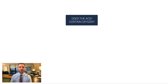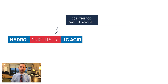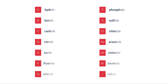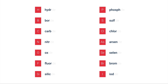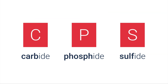If the acid does not contain oxygen, the naming format is: hydro-[anion root]-ic acid. The anion root comes from the IDE names for non-metals — you just ignore the IDE piece. So hydride becomes hydro, boride becomes bore, nitride is just nitr, oxide is ox. There are three exceptions: carbide doesn't become carb, phosphide doesn't become phosph, and sulfide doesn't become sulf. Carbon and sulfur return to their normal names, and phosphorus just drops the -us on the end.